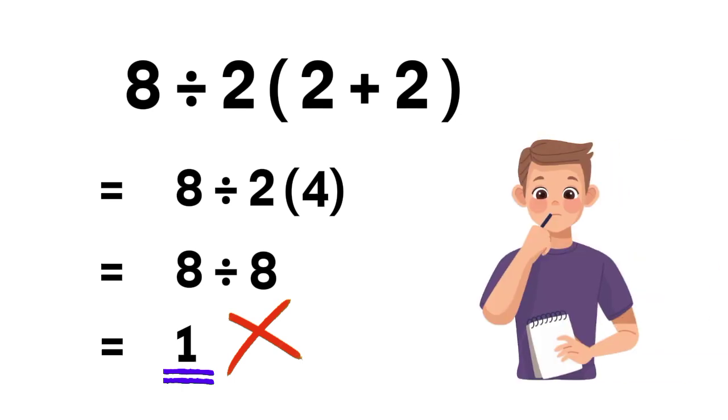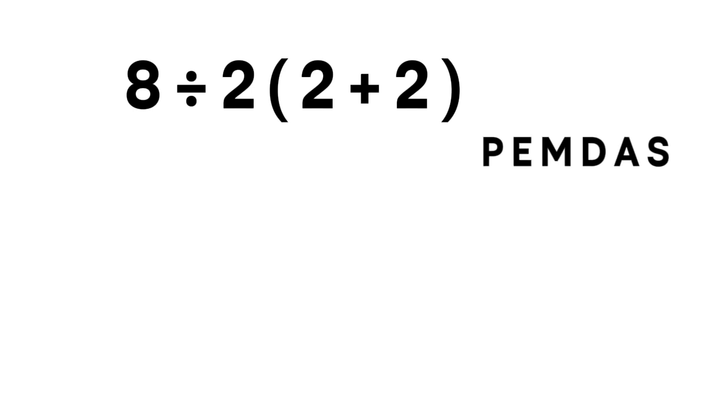Now let's walk through it the proper way using the order of operations: PEMDAS. P stands for parentheses, E stands for exponents, M and D stand for multiplication and division with equal priority from left to right, and A and S stand for addition and subtraction, also equal priority from left to right.